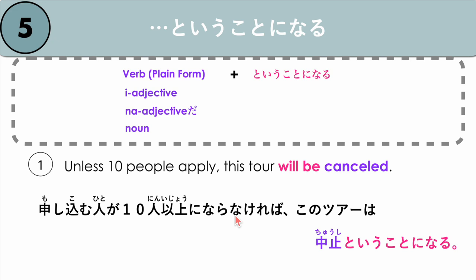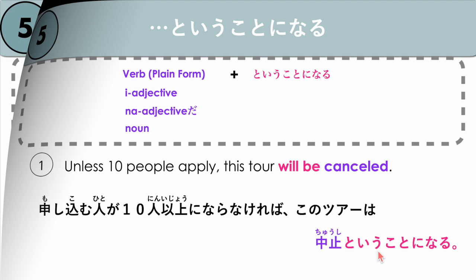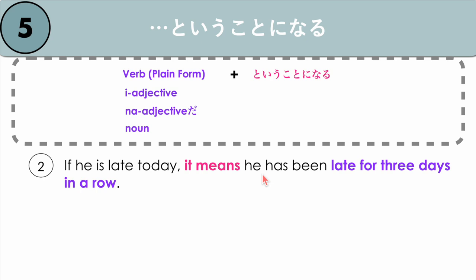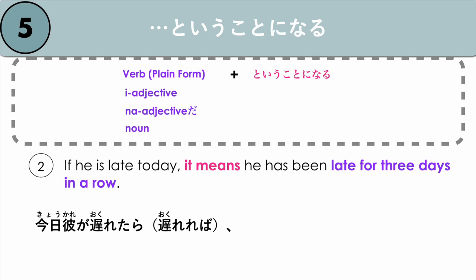Next example: if he is late today, it means that he has been late for three days in a row. Kyou kare ga okuretara — or okurereba — if he is late again today, then it would mean that he has been late for three days in a row. Mikka, tsuzukete okureta — our verb is to be late: okureta in plain form instead of okuremashita — plain form: okureta, plus to iu koto ni naru. Kyou kare ga okuretara, mikka tsuzukete okureta to iu koto ni naru.